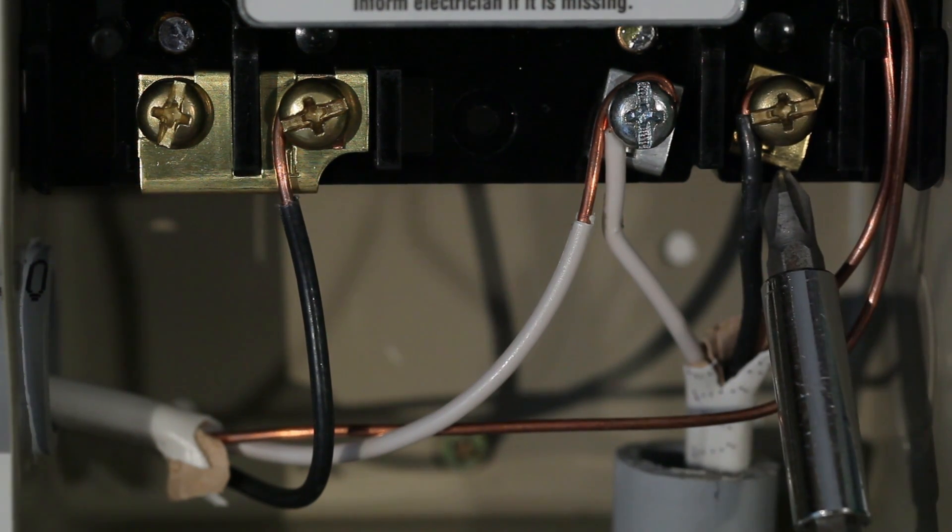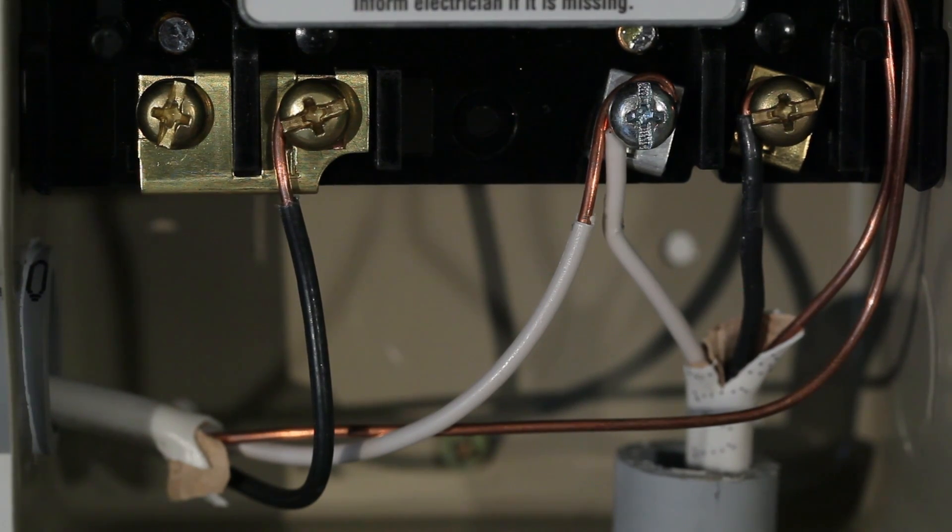Connect the black wire from the switched side to the fourth screw terminal, marked 2 on the far right.